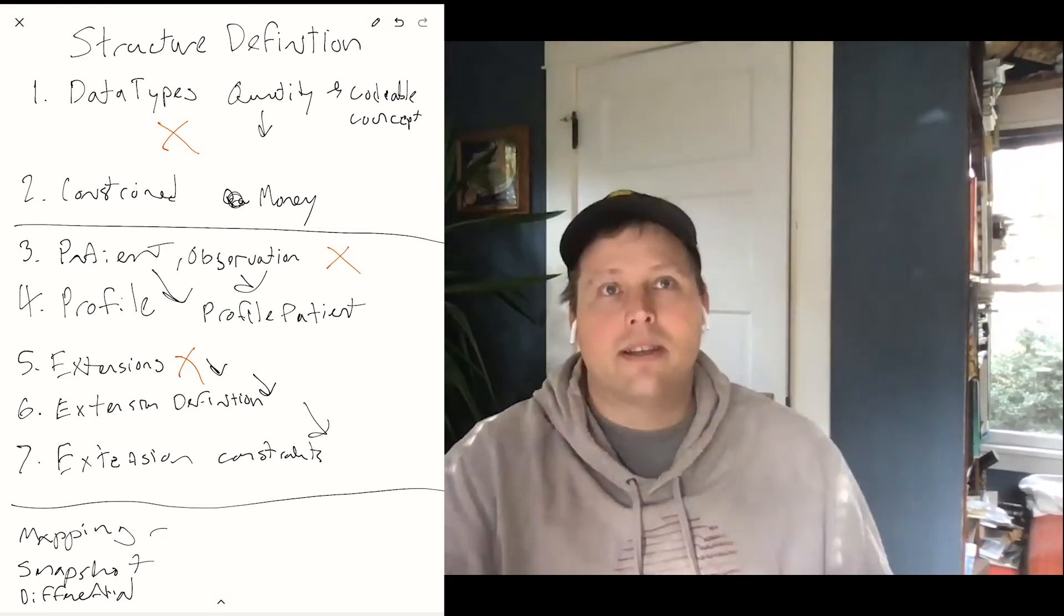Mapping is really simple. You can do it in a couple of different ways. But what the idea is, is that the structure definition can have pointers or sort of logical relationships to other standards or other concepts. So if you look at the FHIR spec, and you say you go to the mappings tab, all that gets rendered from the mappings of a structure definition, and it will say mappings to v3, mappings to CDA, mappings to v2.